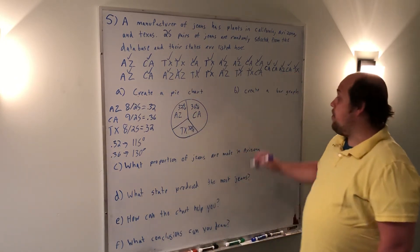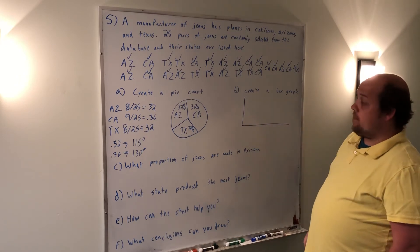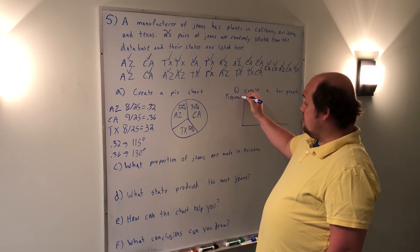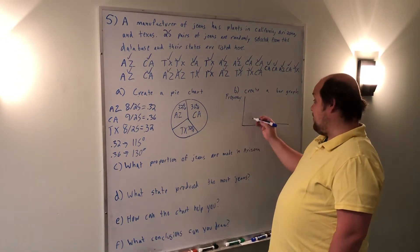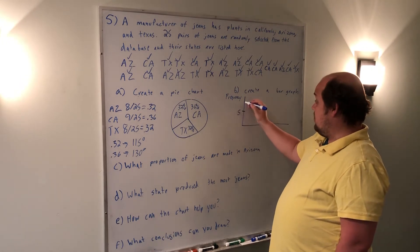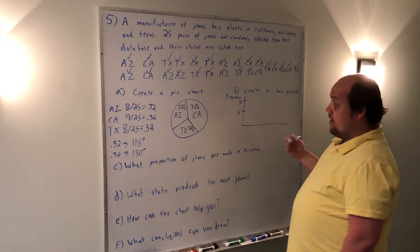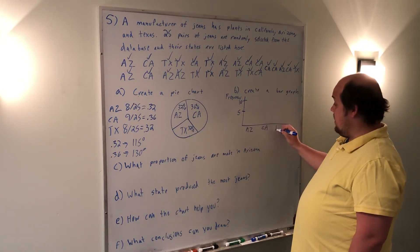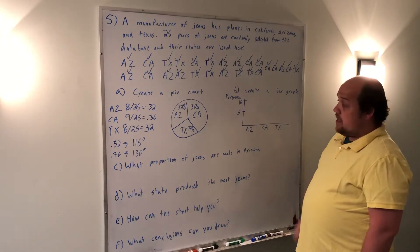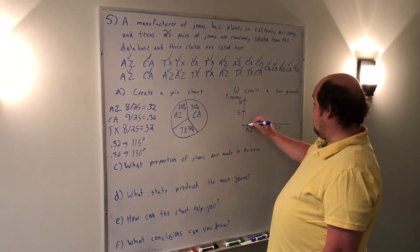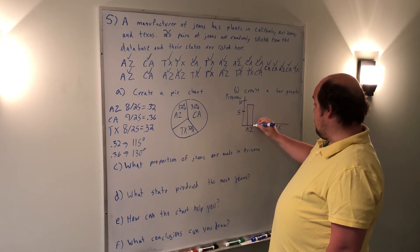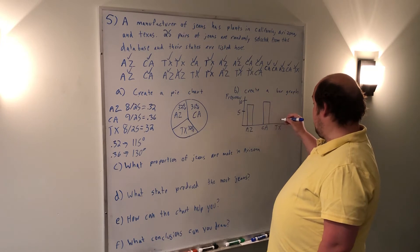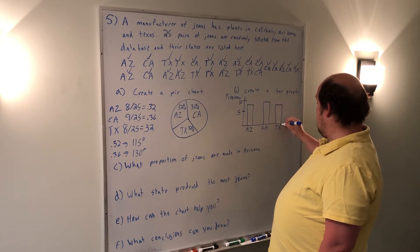When I go to create my bar graph, I start by making my axes. I label this axis frequency. I see that everything's either 8 or 9, so I'm going to go by 5s to 10. Then I'm going to label the bars in alphabetical order. AZ, CA, TX. AZ was 8, so it's going to go up to about 8, come over. CA is going to go up just a little bit higher to 9, and come over. And TX is going to go to 8, and come up.